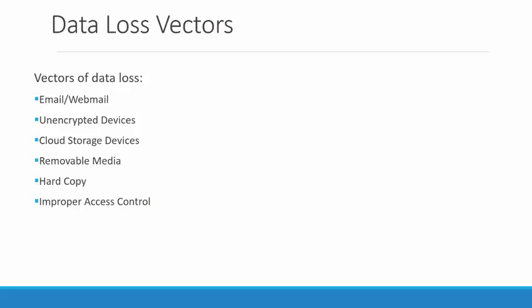Lastly, improper access control — stolen or weak passwords make it easier for an attacker. Train yourself and your employees to use strong passwords, don't write them on monitors, and don't let someone look over your shoulder when entering them. That concludes the first part of the first section — our terms, topologies, attack vectors, and data loss vectors.